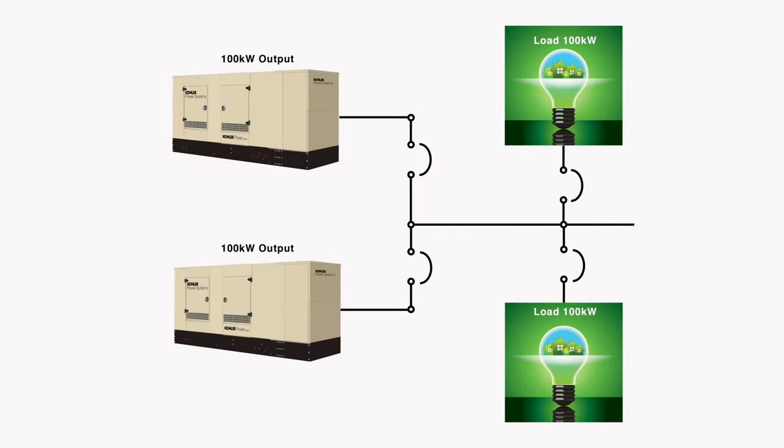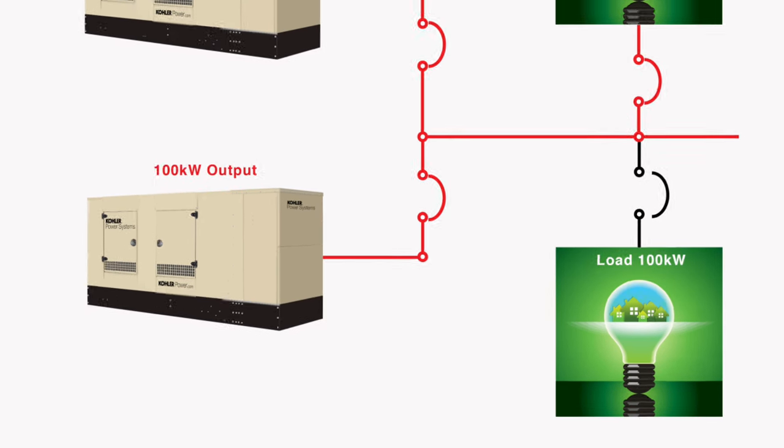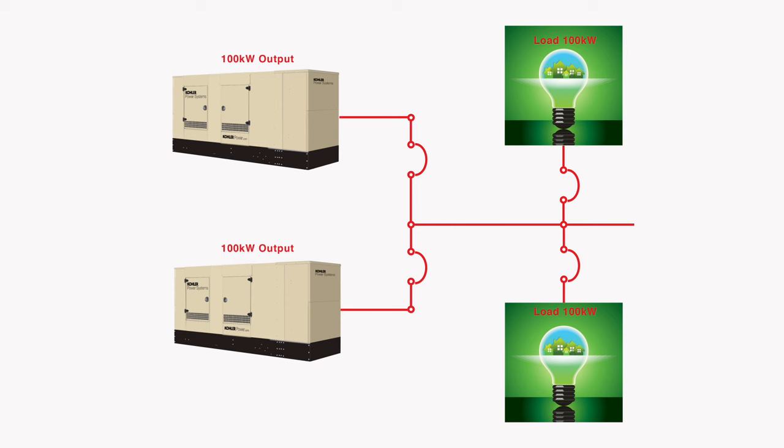For one, when two smaller sets are used instead of one large set to manage a large intermittent load, one set is run in parallel as load varies. Lightly loaded engines are susceptible to wet stacking.